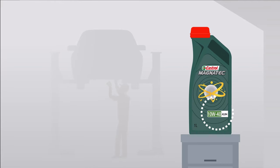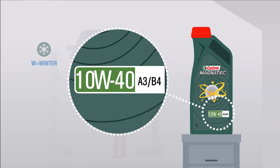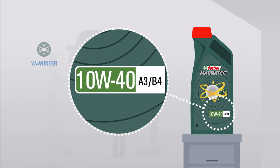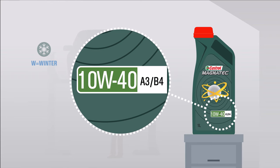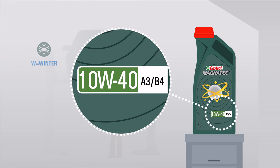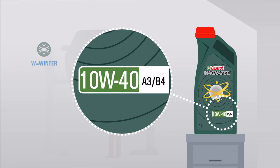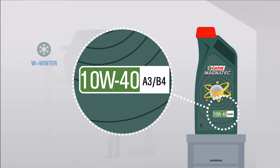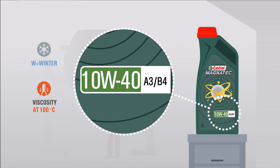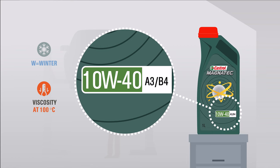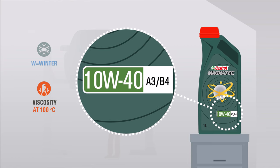The number before the W, which stands for winter, indicates the viscosity at low temperature — for example, before you start your engine. The number right after the W stands for viscosity level at 100 degrees Celsius, which is near the normal operating temperature of your engine.